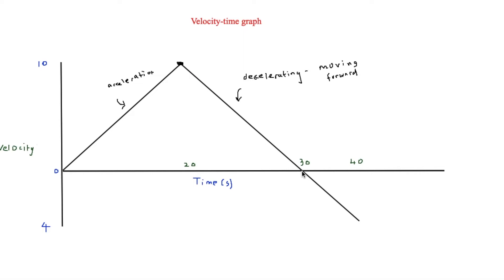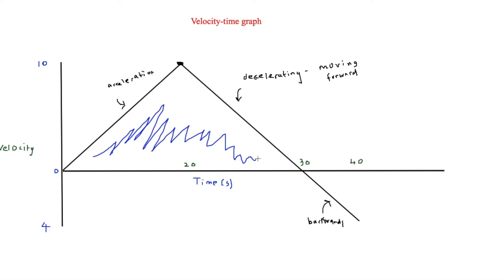At the point where the line crosses zero, it means the object is starting to move backwards — so the speed is now increasing in the opposite direction, backwards. The area between the velocity-time graph and the x-axis represents the displacement. So the area under the graph gives the displacement for the first 30 seconds, and if you wanted 40 seconds, you would add on the next section's area.